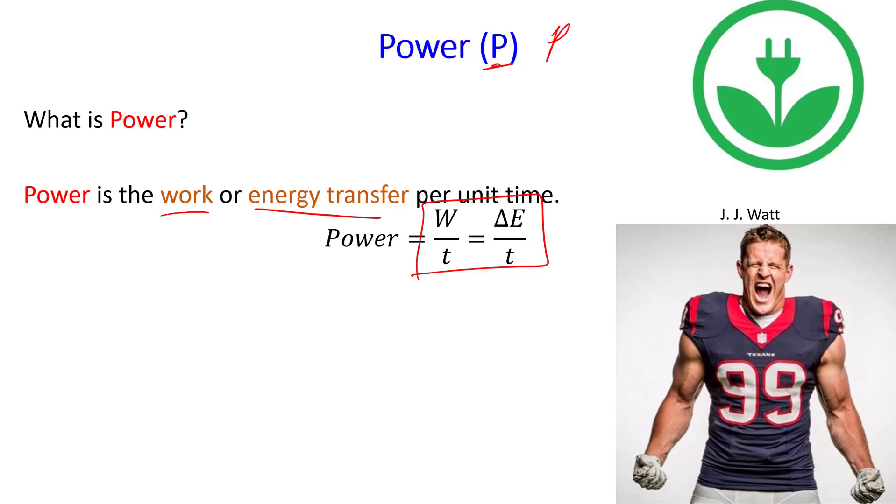So that means power is a rate. If we can do the same amount of work faster, we're more powerful. Or if we can do more work in the same amount of time, we're more powerful. If two people can run up the stairs in the same amount of time, their time is the same. But whoever is more massive is more powerful because they had to do more work to lift themselves up the stairs.